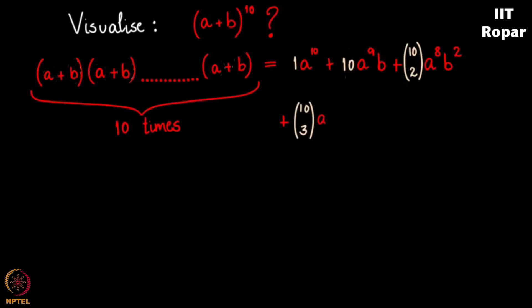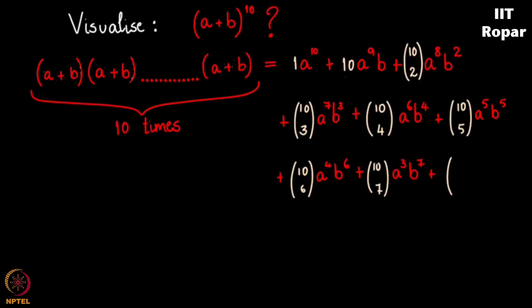Similarly, you pick 3 b's and the rest of the cells you'll pick a's. Let me complete this now. Finally we have 10 choose 10 and no a's are picked, which means out of 10 cells all 10 cells are b's, which means this will be b to the 10.